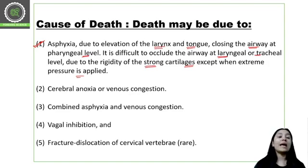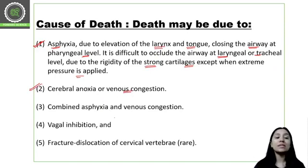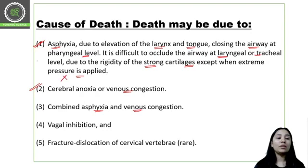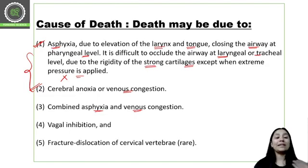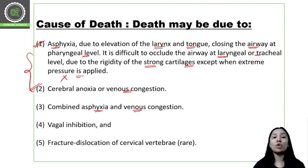Because of extreme pressure, the tongue and larynx elevate, blocking the airway, and the person is not able to breathe — leading to asphyxia. Another cause is cerebral anoxia or venous congestion, where pressure causes venous congestion leading to death. A combined asphyxia and venous congestion can also be the cause. Additionally, vagal inhibition can lead to death.